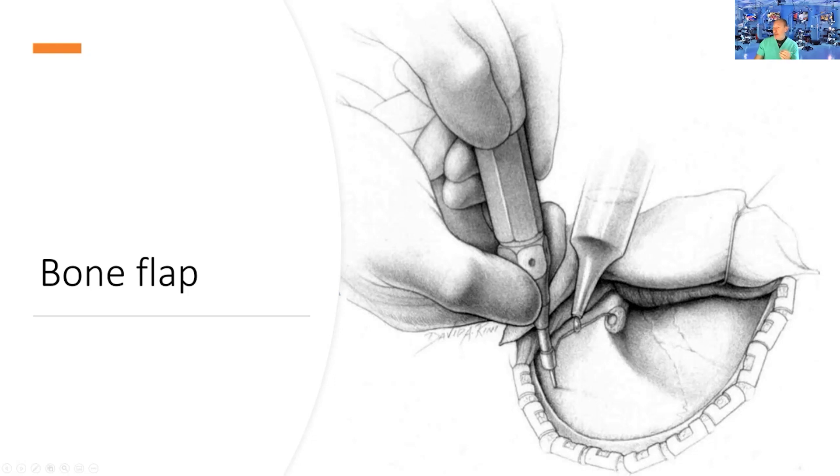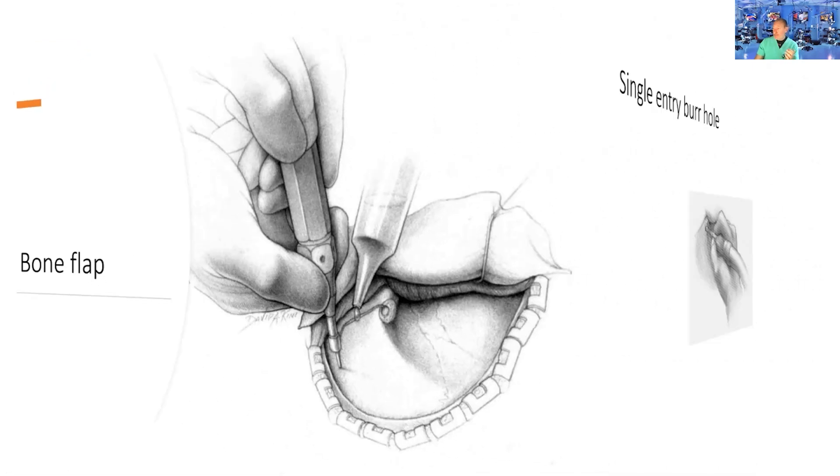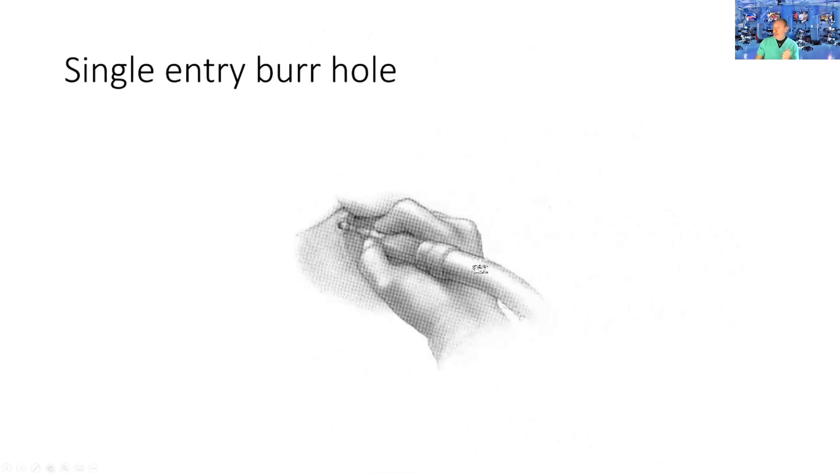The single entry burr hole, the McCarty burr—whether using perforators or a regular drill with cutting burr. I tell people not to aim into the orbit; aim intracranially because you want to see the intracranial dura, not the orbit unless doing orbitozygomatic.